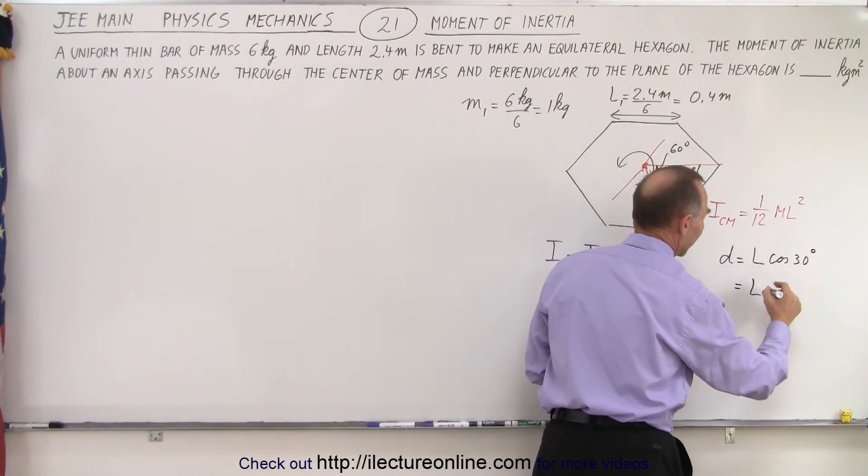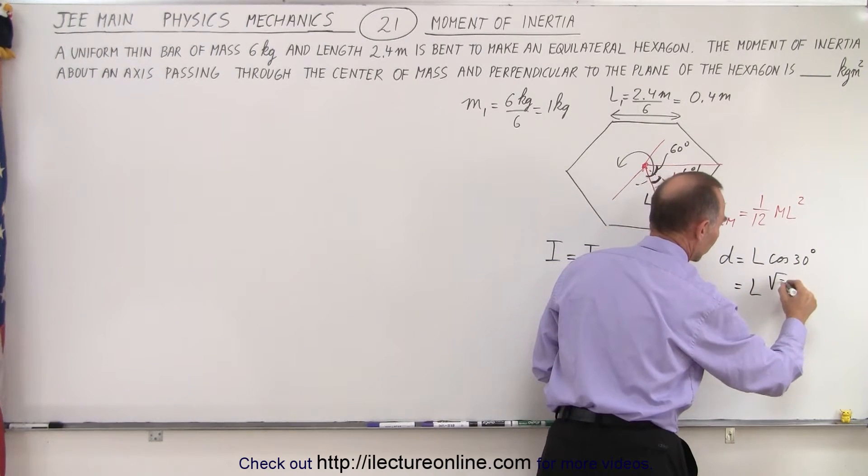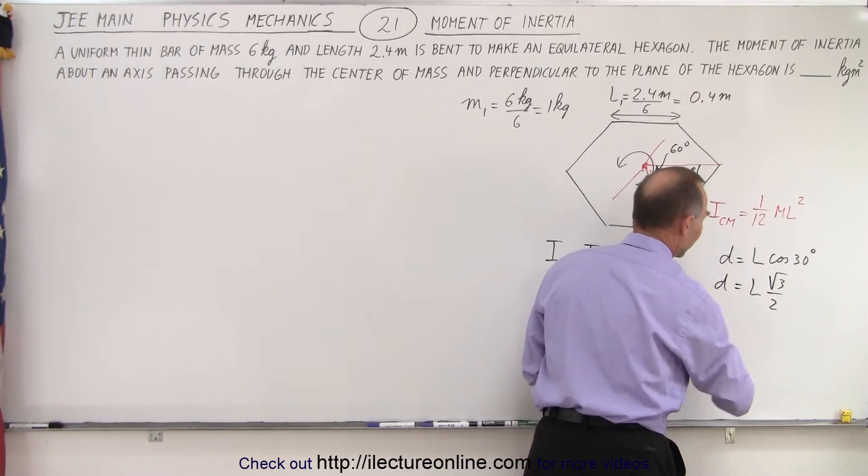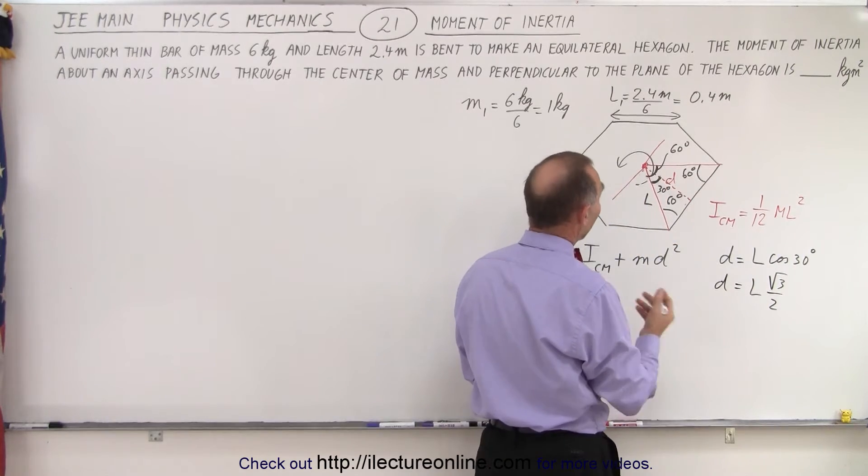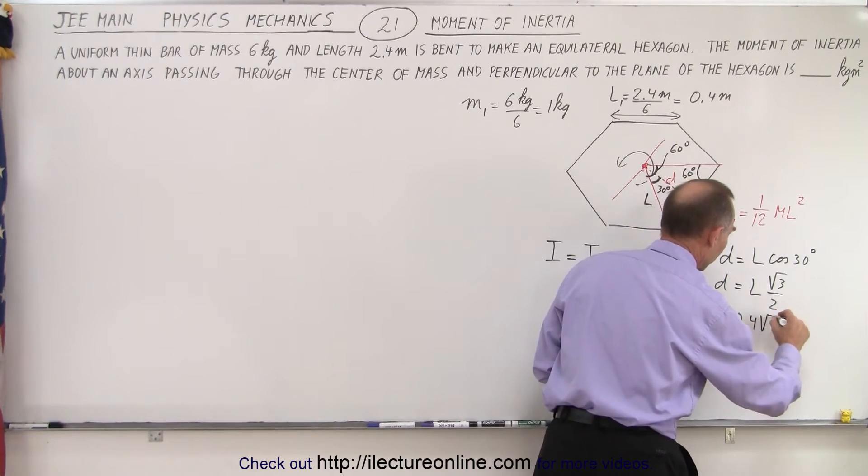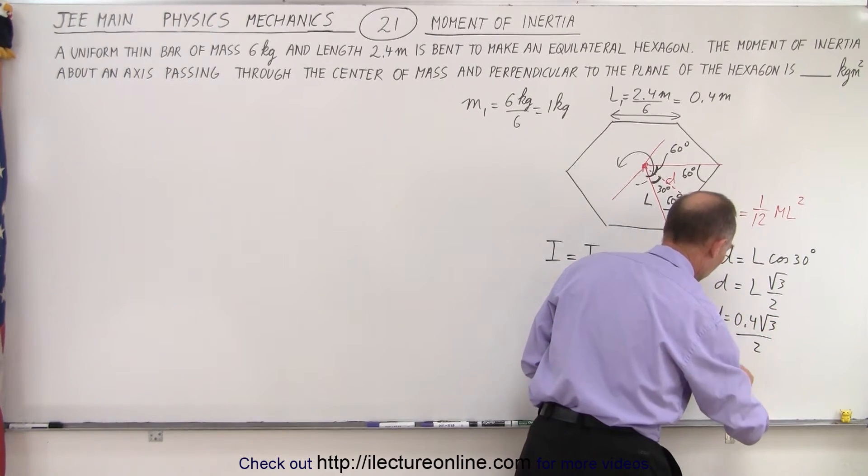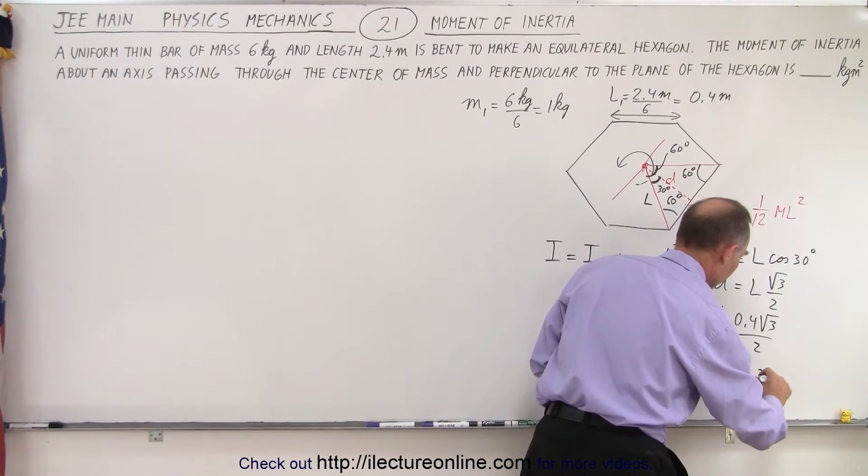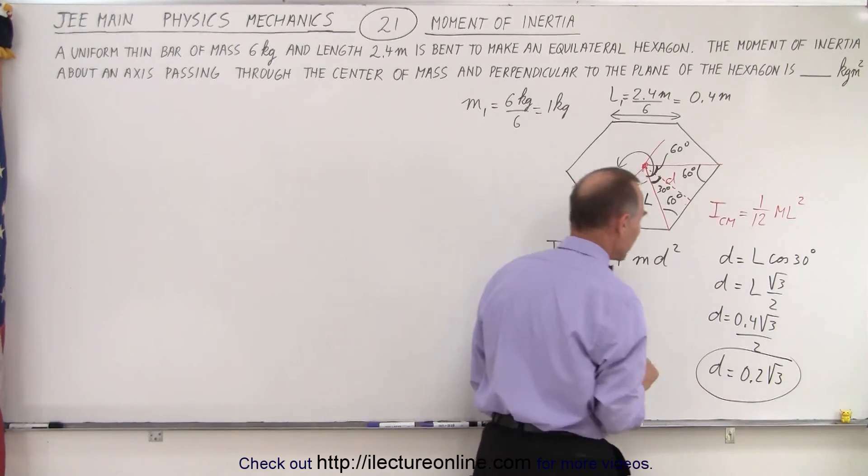And we can calculate d as being equal to L, the hypotenuse of the triangle, times the cosine of 30 degrees. And of course in this case that's L times the cosine of 30 degrees which is the square root of 3 over 2. So that's the distance d. Since L is 0.4, so d can then be written as 0.4 times the square root of 3 divided by 2, or d can be written as 0.2 times the square root of 3. So now we have a value for d.